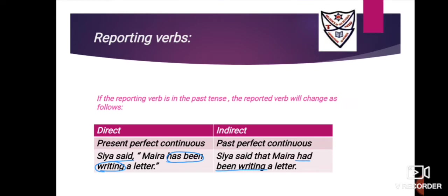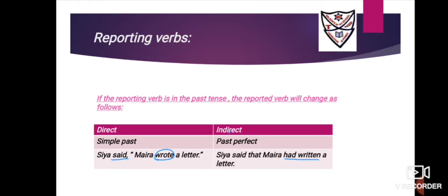Next: if the reporting verb is 'said' and the reported verb is in present perfect continuous tense, change it to past perfect continuous. Example: 'Siya said, Myra has been writing a letter.' Underline 'said,' circle 'has been writing.' Because the reporting verb is 'said,' 'has been writing' (present perfect continuous) changes to 'had been writing' (past perfect continuous). Answer: 'Siya said that Myra had been writing a letter.'